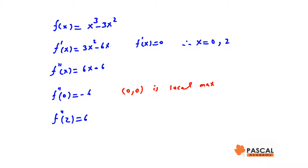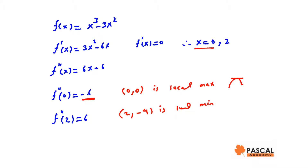f prime of 0 is 0 and f double prime of 0 is negative, so it is a local maximum. Plugging x equals 2 into the function gives negative 4, so the point (2, -4) is a local minimum, since f prime of 2 is 0 and f double prime of 2 is positive.